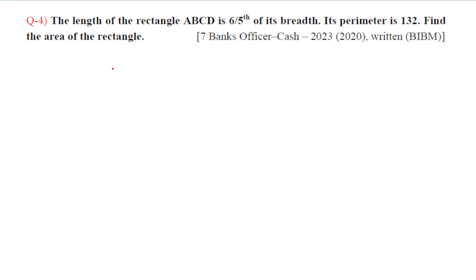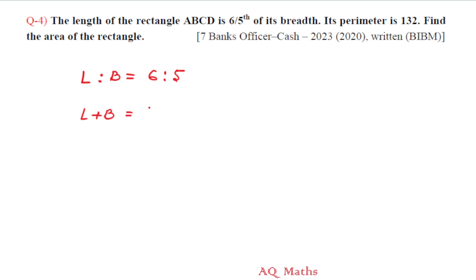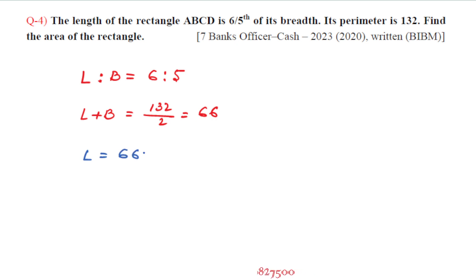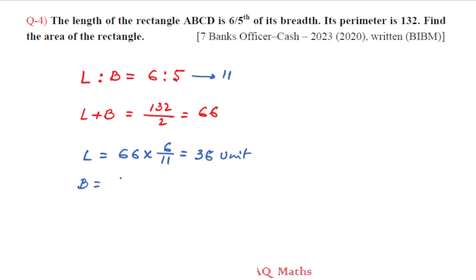The length is 6/5 of breadth. Using the perimeter formula: 2 times length plus breadth equals 132, so length plus breadth equals 66. Substituting, 6/5 breadth plus breadth equals 66, giving 11/5 breadth equals 66. So breadth equals 66 times 5 divided by 11, which is 30 units. Length equals 36 units.